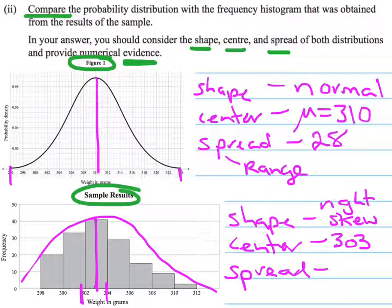Then the spread in terms of my range, it's going from 298 up to 312. So that's a spread or range of approximately 14. So that's just making some notes about them.